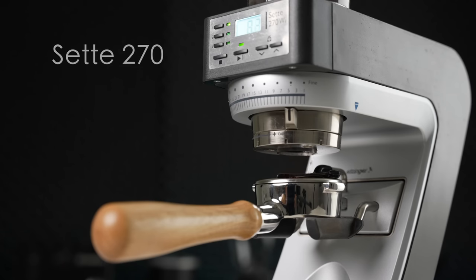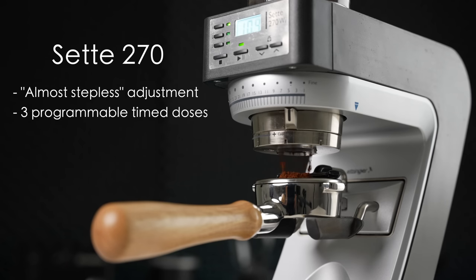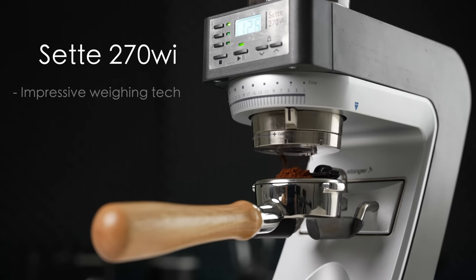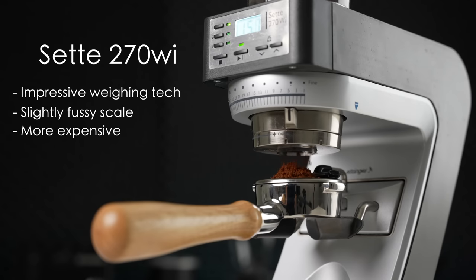Stepping up to the 270 will give you an almost stepless level of grind adjustment, which is more than good enough for dialing in espresso, and also provides three programmable time-based dosing buttons. The 270Wi has some impressive tech built in, but in its current form, the increased fussiness and price to gain marginal dosing consistency improvements make it hard to justify over the already great base 270.